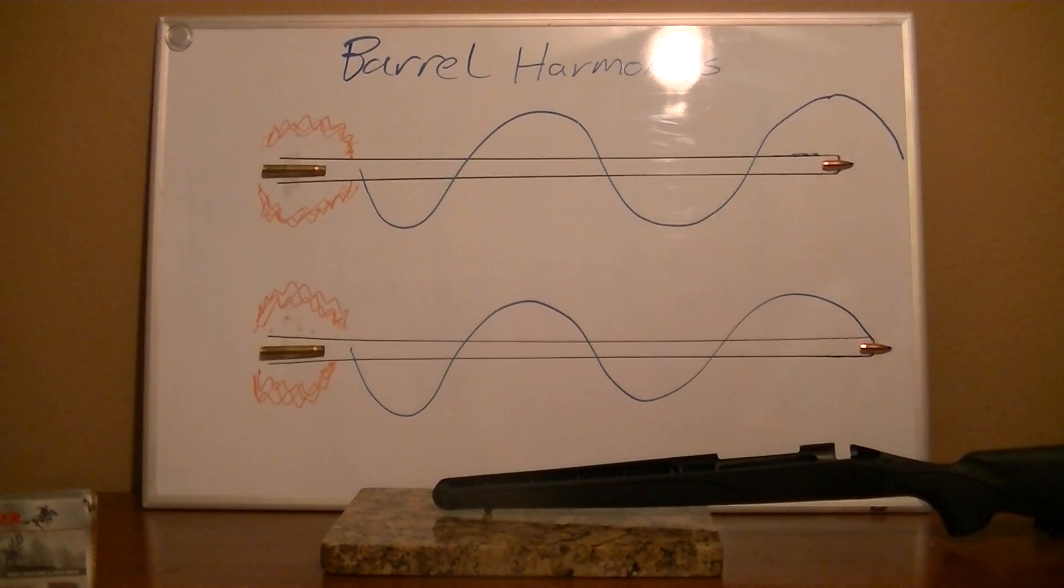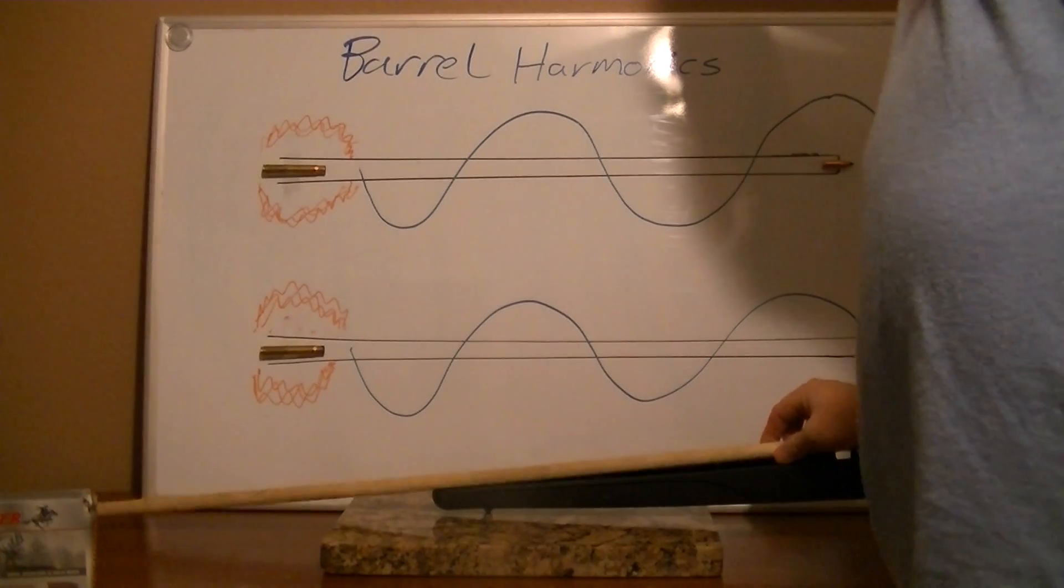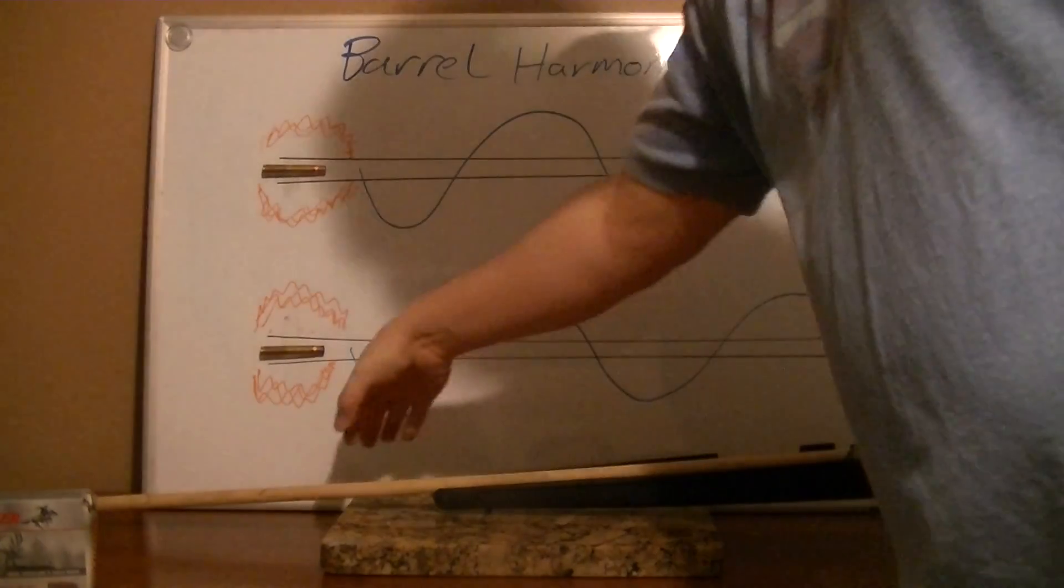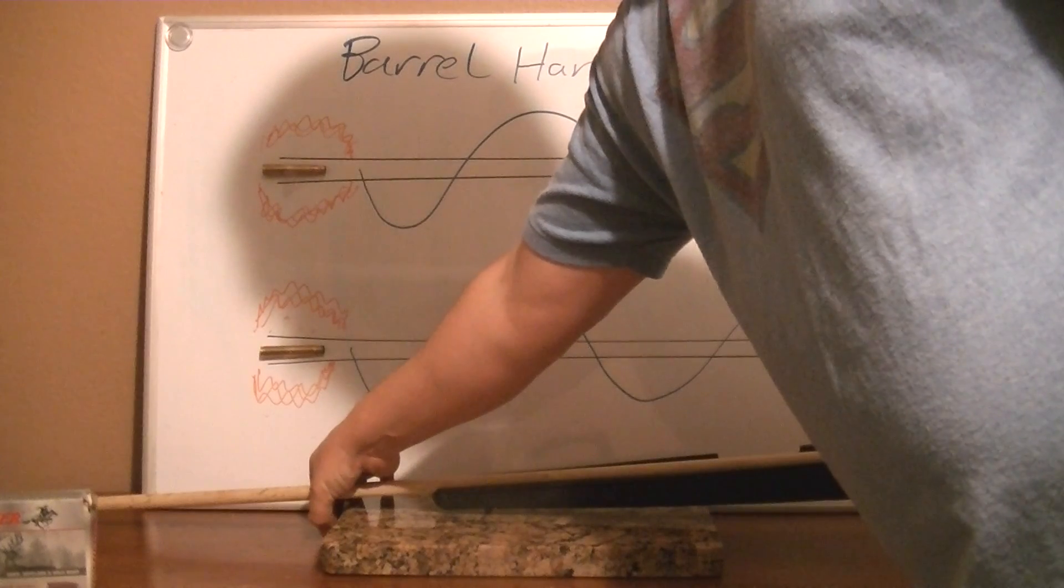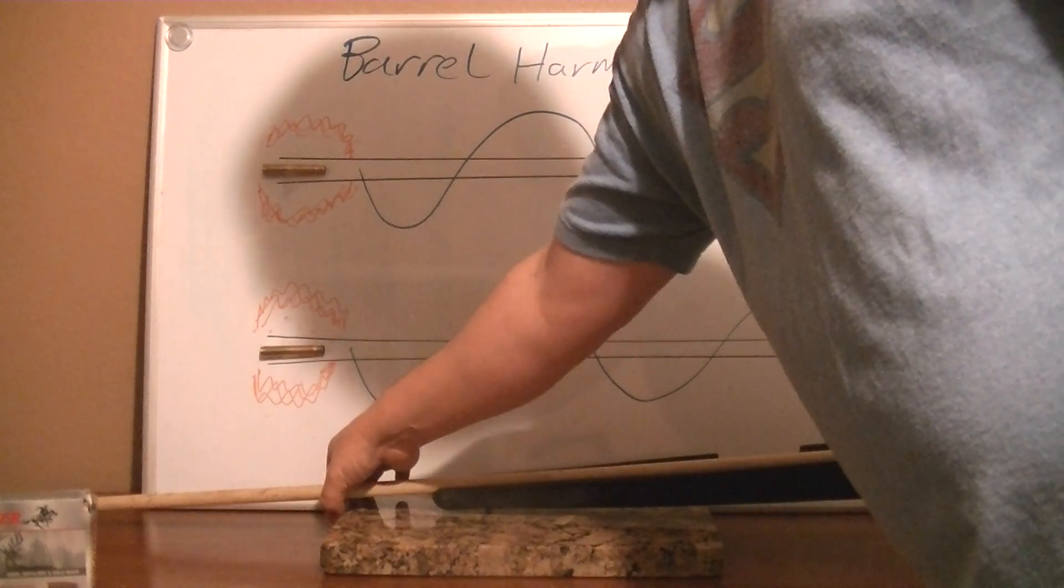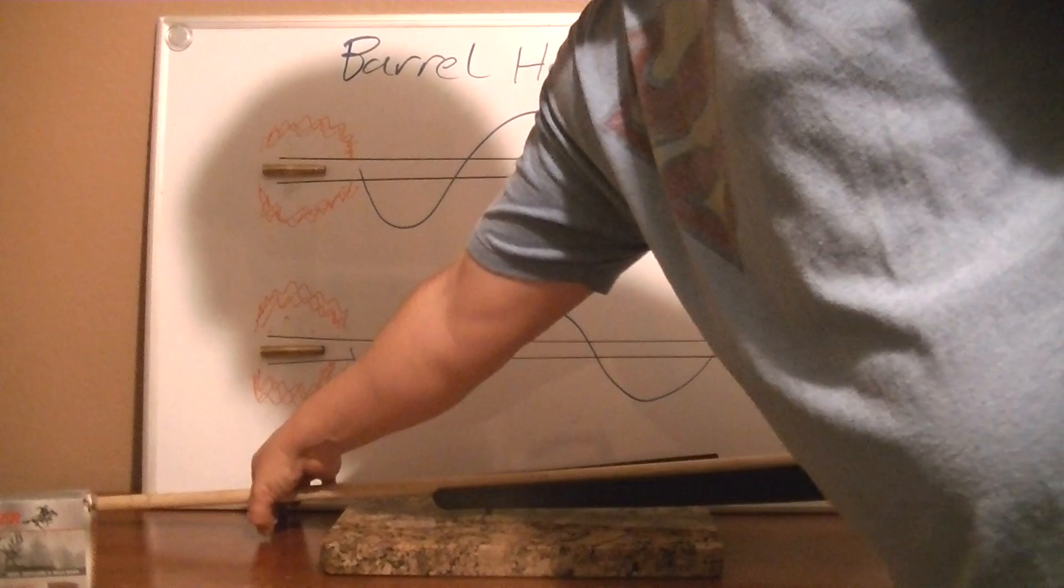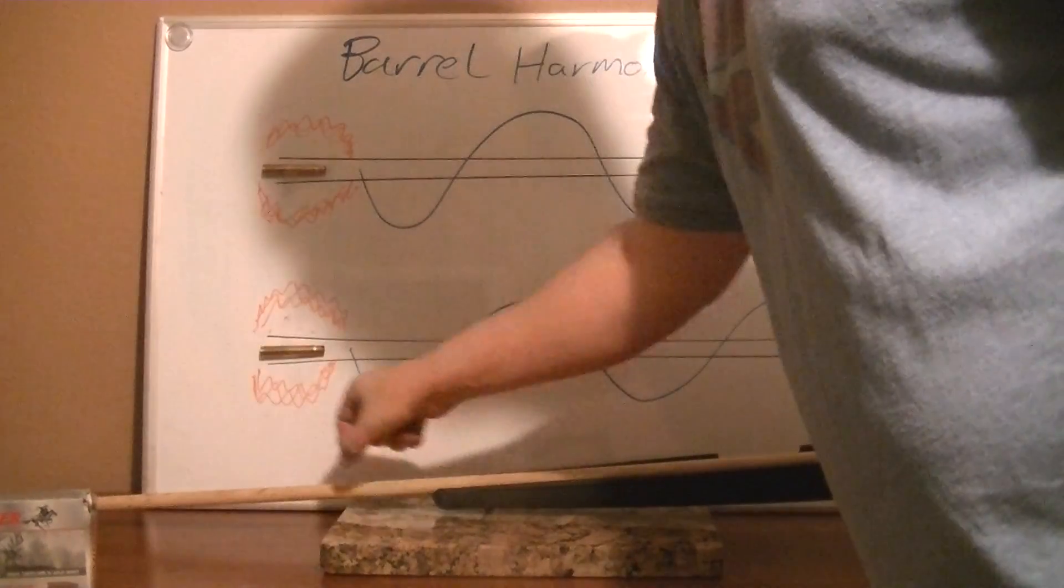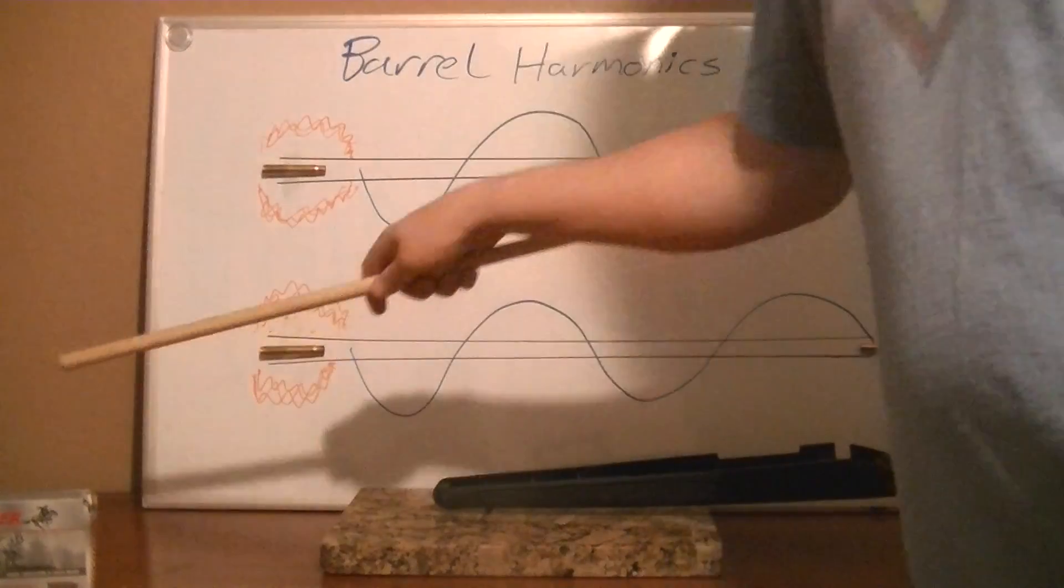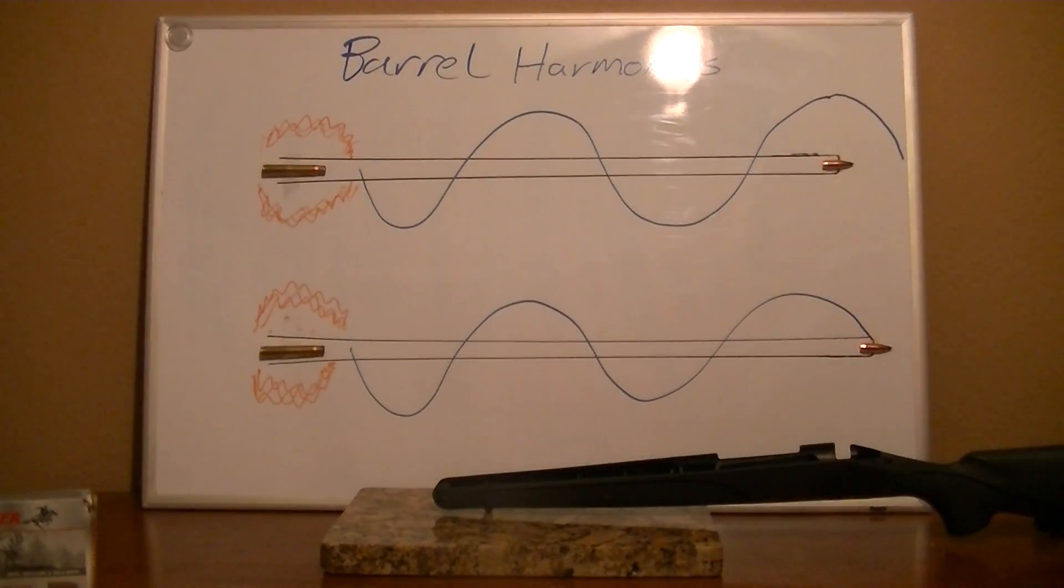The other method you can try is there's a company called Limb Saver that makes a rubber piece that goes on your barrel. You put the rubber piece on and you shoot it, then you move the rubber piece and shoot it. What you're doing is you're using the weight of the rubber piece on the barrel to change its vibration pattern until you find that sweet spot where the bullet exits.